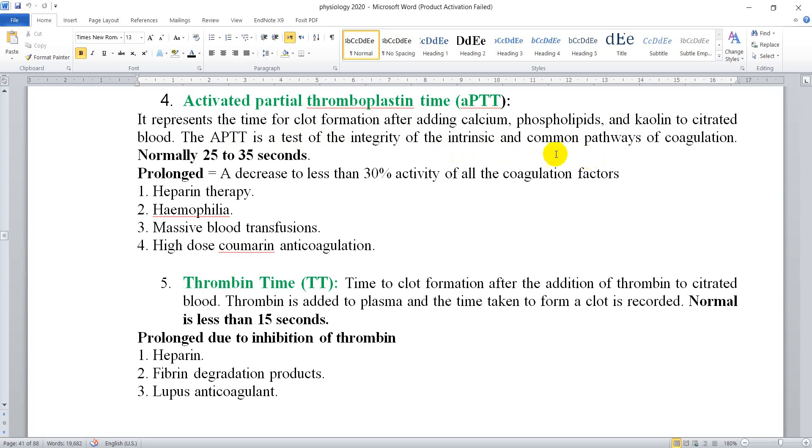Whereas the previous test assessed the extrinsic pathway, APTT assesses the intrinsic pathway. The normal range for APTT is between 25 and 35 seconds. Prolongation means a decrease to less than 30% activity of all coagulation factors.